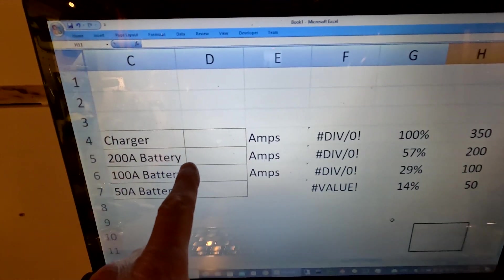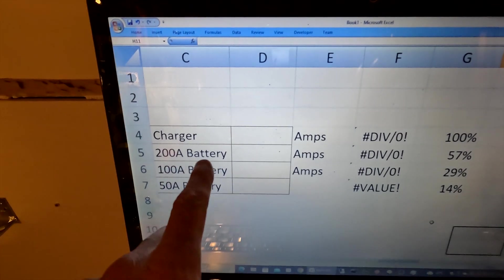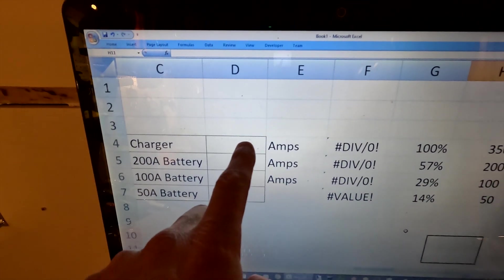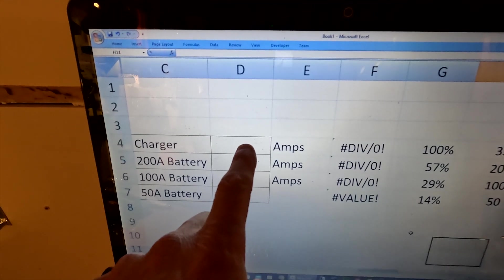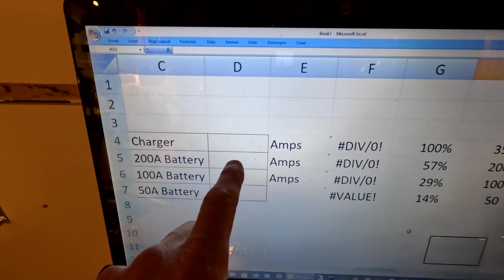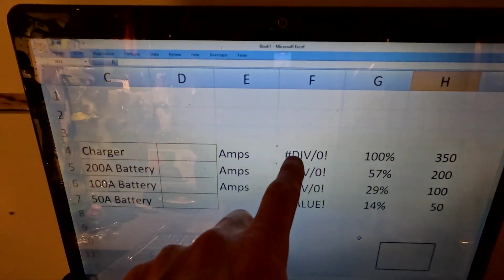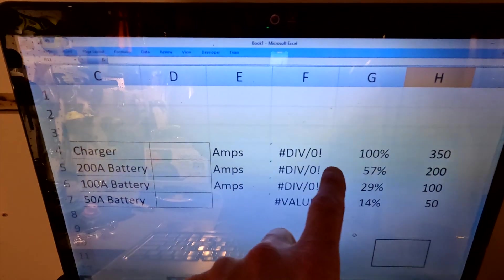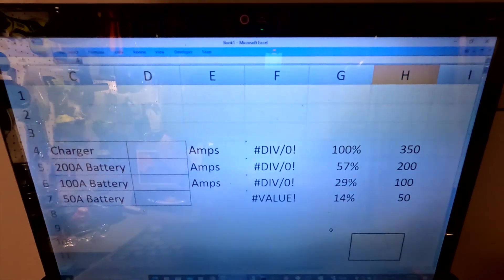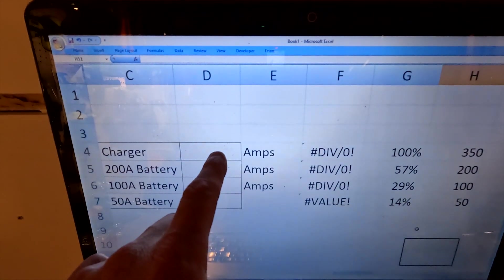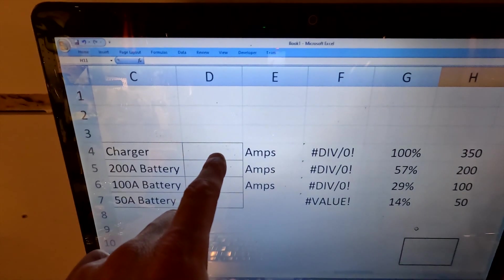So now over here is the batteries. And what I'm going to do is I'm going to fill in the charging amperage, the total charging amperage. And then I'm going to fill in how much each battery is getting. And we're going to see what the comparison is between these two percentages. So let's go ahead and find out the amperage of the charger right now.